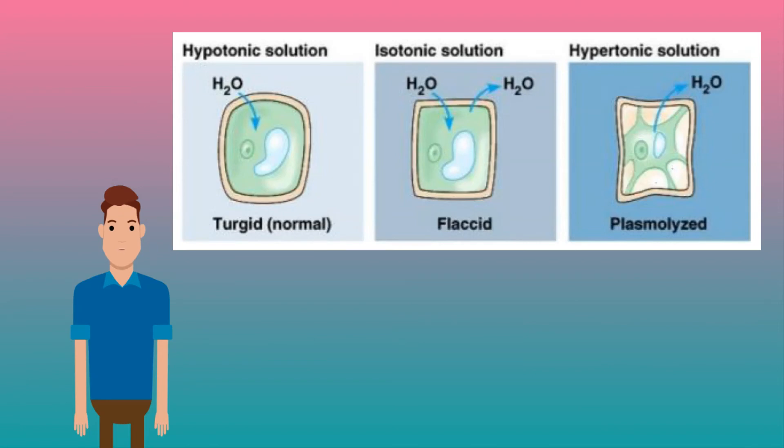Next, an isotonic solution. The water potential in and out of the cell is in equilibrium so there is no net osmosis. In a plant cell, this is called flaccid. The cells are slightly soft because it is not full of water.